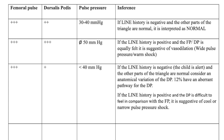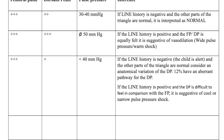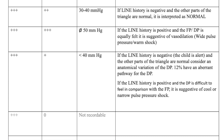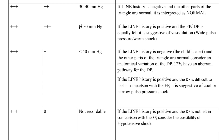12% of individuals have an aberrant pathway for the dorsalis pedis. If the LINE history is positive and the dorsalis pedis is difficult to feel in comparison with the femoral pulse, it is suggestive of cool or narrow pulse pressure shock. If the central pulses are 3+ and the peripheral pulse is 0, and the LINE history is positive with the dorsalis pedis not felt in comparison with the femoral, consider the possibility of hypotensive shock.